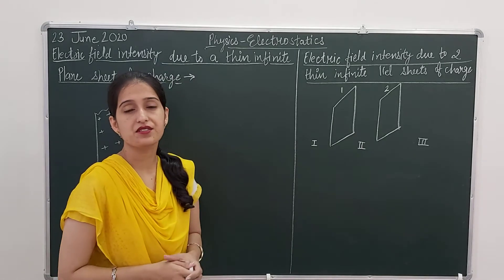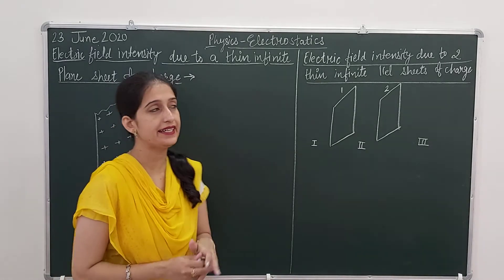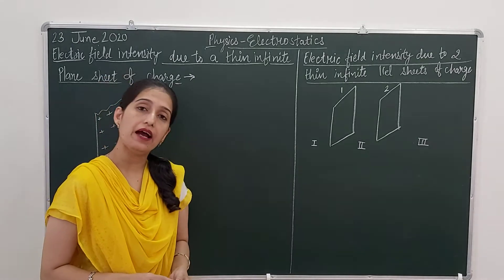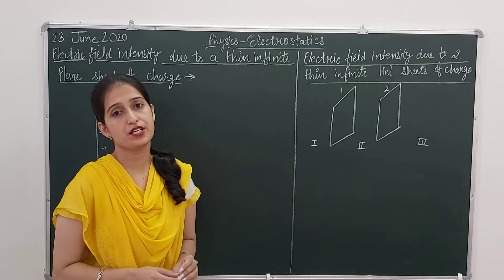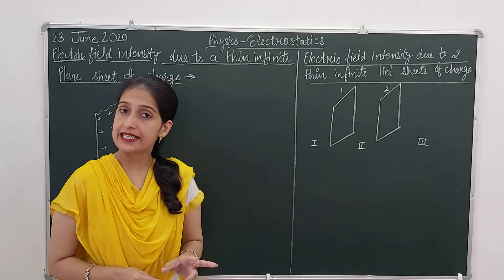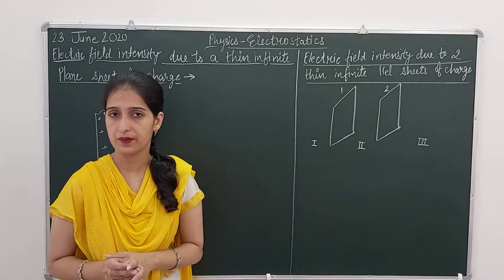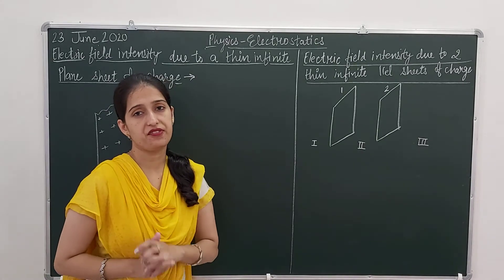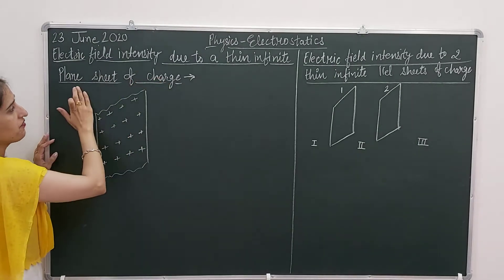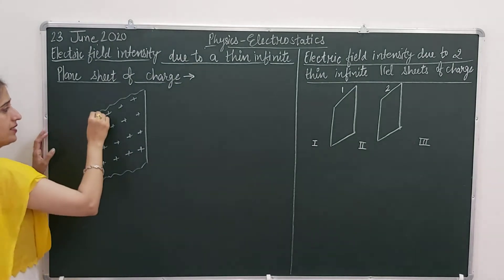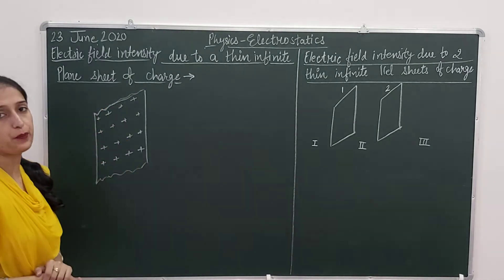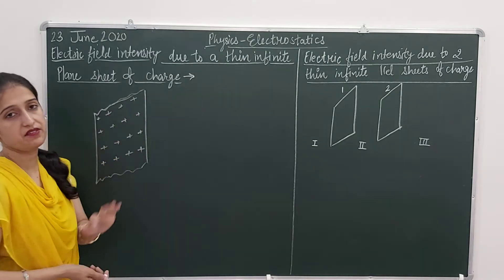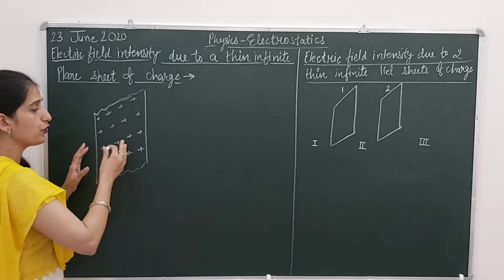Hello everyone. In physics class we are doing the first unit of Class 12, that is electrostatics, and we are doing the topic Gauss's law and its applications. Two applications we have already discussed: one is to find out the electric field due to a uniformly charged spherical shell, and second is to find out electric field intensity due to a solid sphere. Today we are going to discuss the third application of Gauss's law — to find out the electric field intensity due to a thin infinite plate sheet of charge. This sheet is extended up to infinity. It is very thin, its thickness is negligible compared to its size, and it is positively charged.